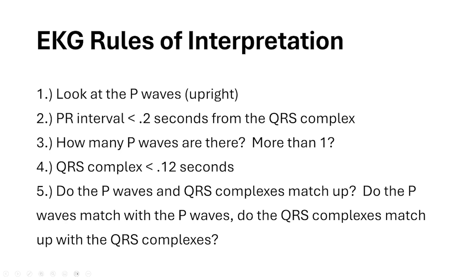First, we have to look at our EKG rules of interpretation. There are five main rules. We want to look at the P waves — are they upright? We want to look at the PR interval — is it less than 0.2 seconds from the QRS complex? How many P waves are there? We want to look at the QRS complex and make sure it's less than 0.12 seconds, and do the P waves and the QRS complexes match up with each other? That's very important.